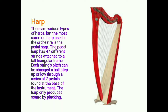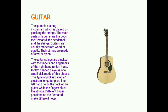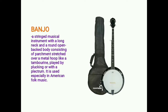The harp produces sound only by plucking. The guitar is a string instrument played by plucking the strings. The main parts of a guitar are the body, the fretboard, the headstock, and the strings. Guitars are usually made from wood or plastic; their strings are made of steel or nylon. The strings are plucked with the fingers and fingernails or a small pick made of thin plastic called a plectrum or guitar pick. The left hand holds the neck while the fingers press the strings; different finger positions on the fretboard make different notes.